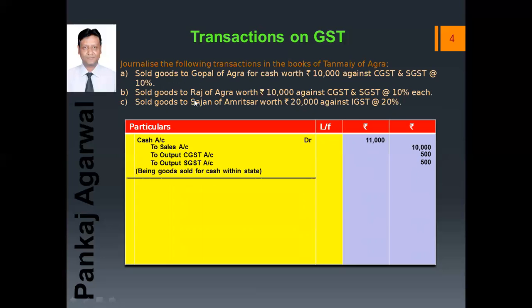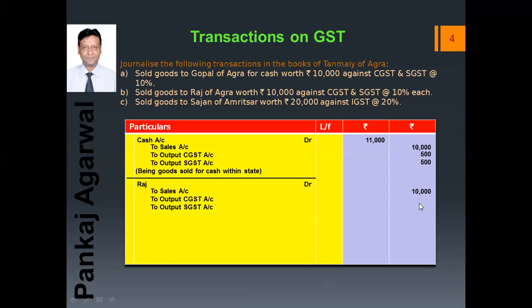Now the second sales transaction: sold goods to Raj of Agra worth ₹10,000 against CGST and SGST at the rate 10% each. The journal entry will be: Raj debit, to Sales Account, to Output CGST Account, to Output SGST Account. First write the amount in front of Sales. Calculate 10% of ₹10,000, which is ₹1,000 for CGST, and again ₹1,000 for SGST. Together it is ₹12,000, written in front of Raj. The narration is: being goods sold on credit within the state.